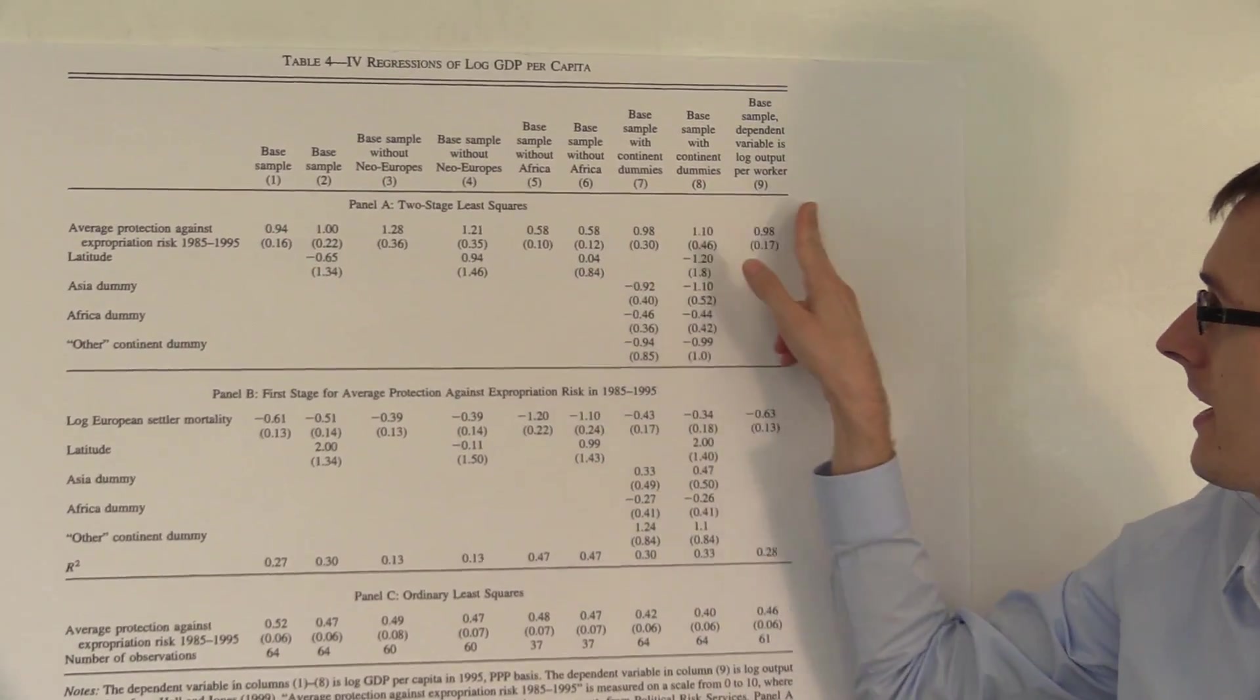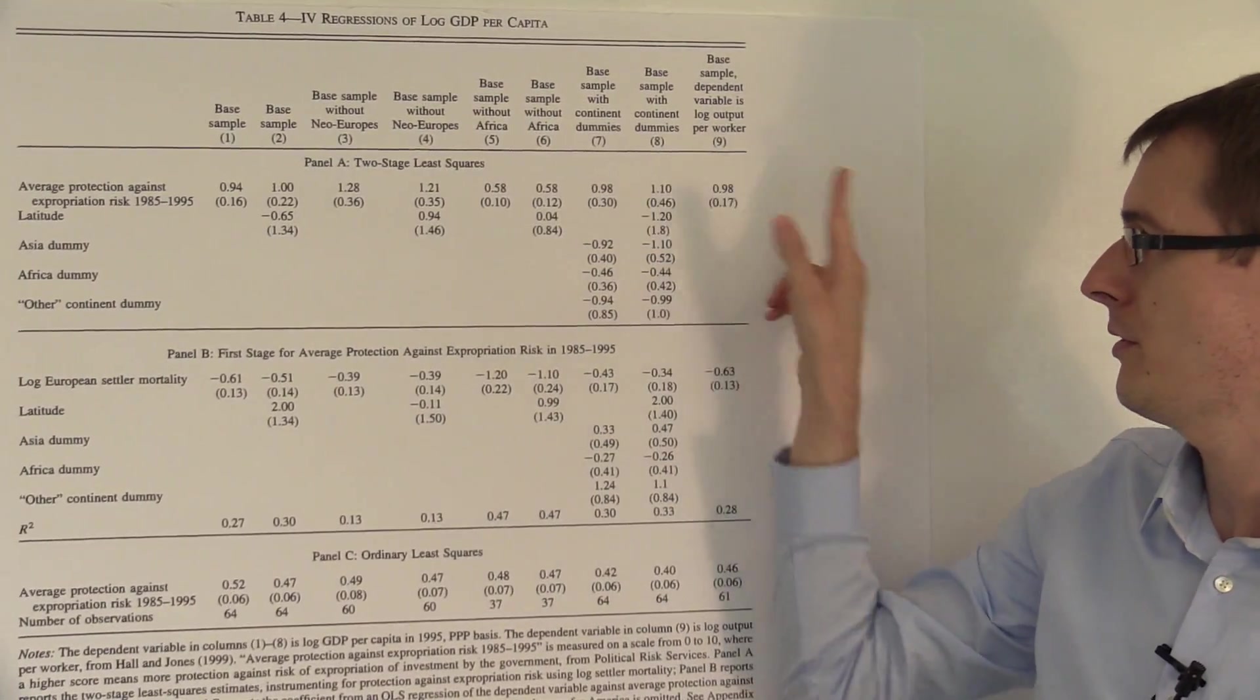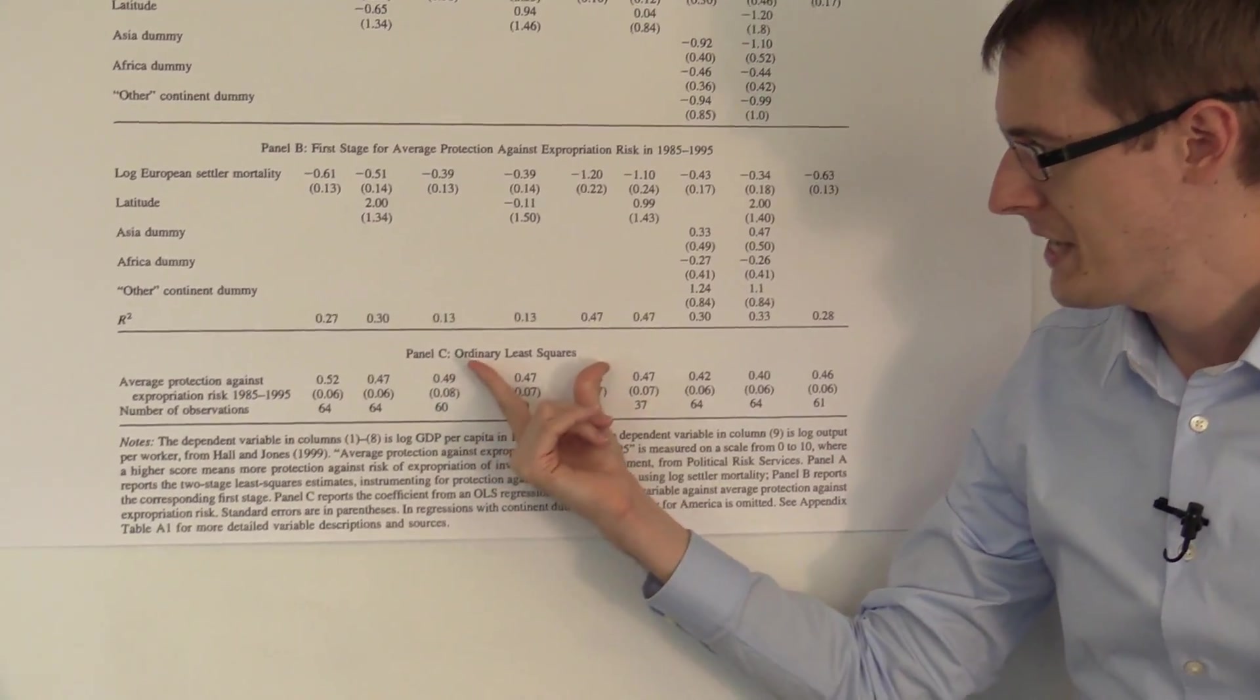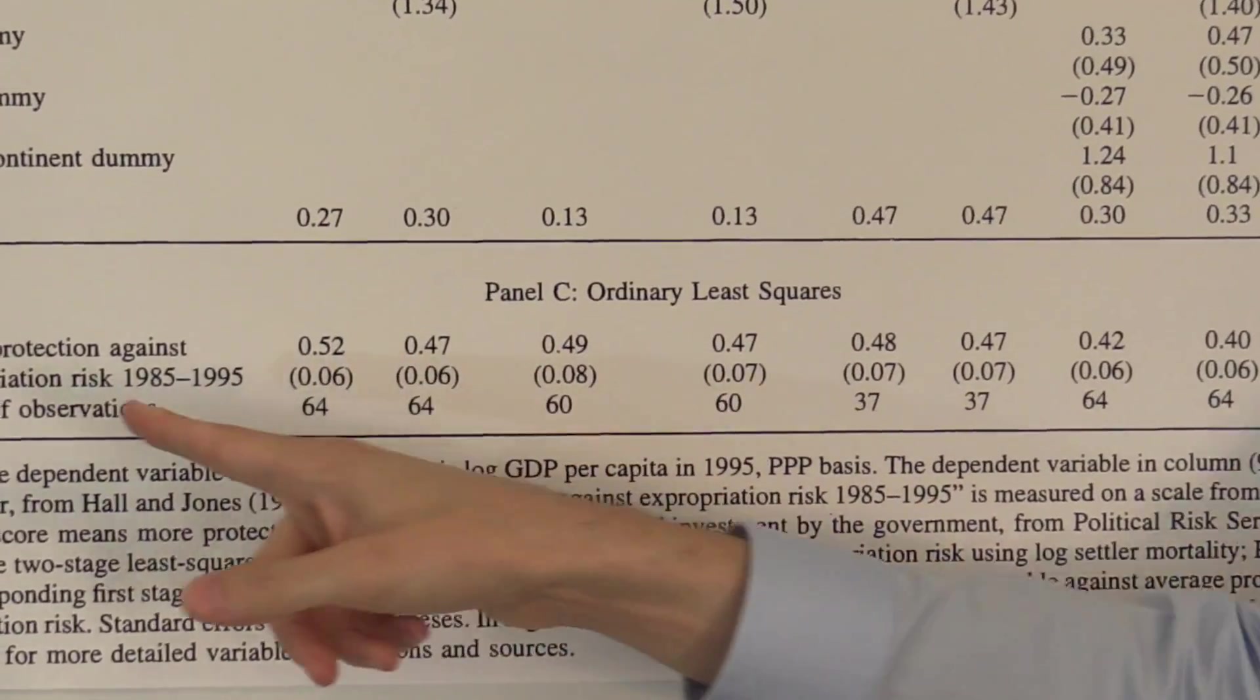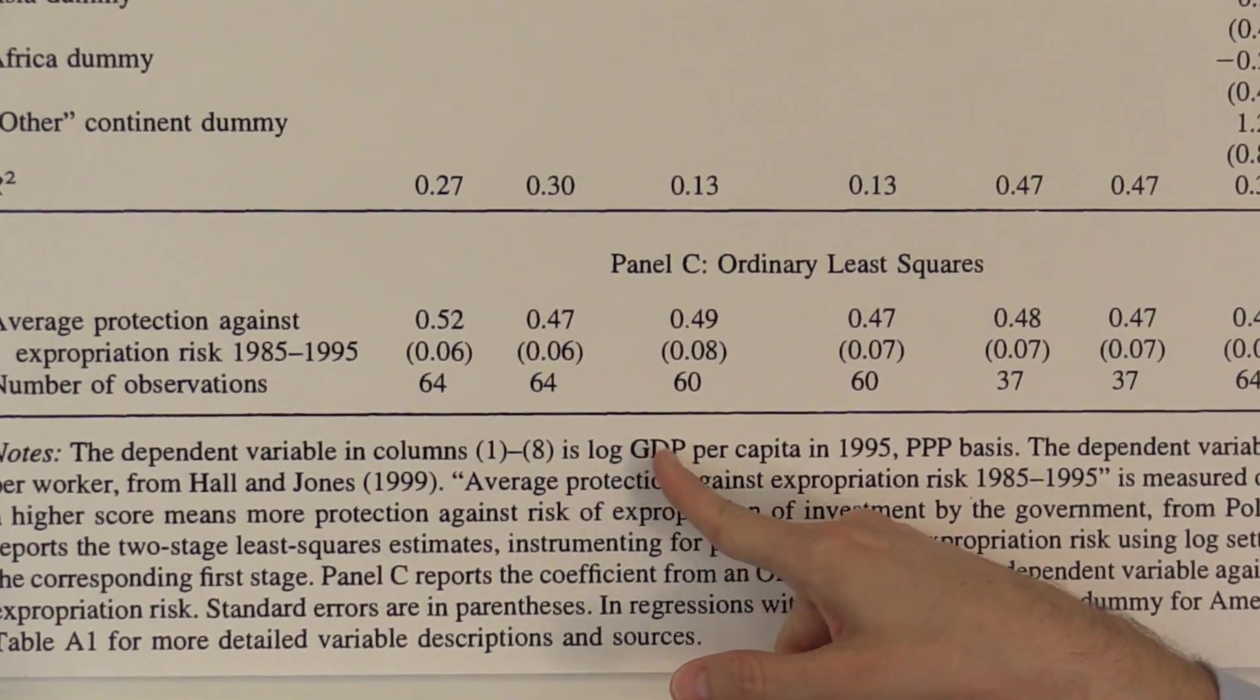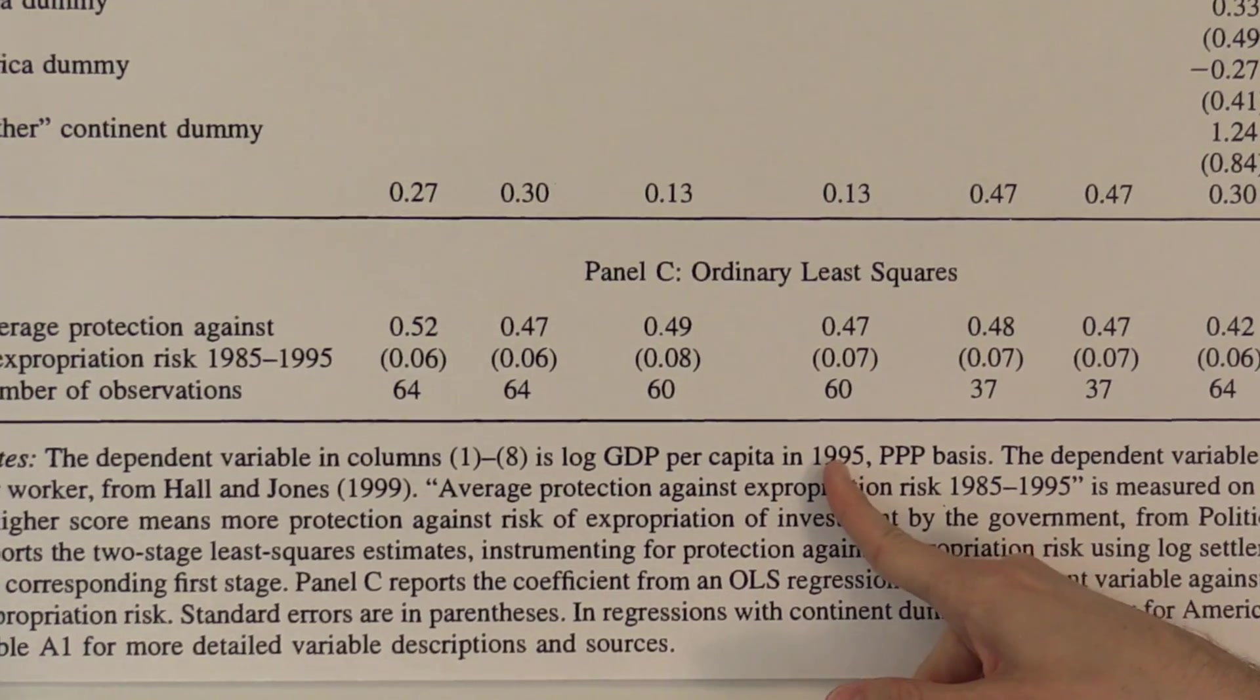And then nine columns, one through nine. Down here in panel C, it's titled Ordinary Least Squares. They say in the notes the dependent variable in columns one through eight is log GDP per capita in 1995.